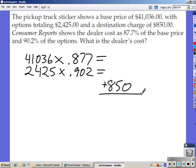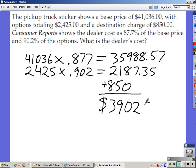So let's figure this out. $41,036 times .877, $35,988.57, and then $2,425 times .902 is $2,187.35. Add those three things together. You should come up with a dealer's cost of $39,025.92.